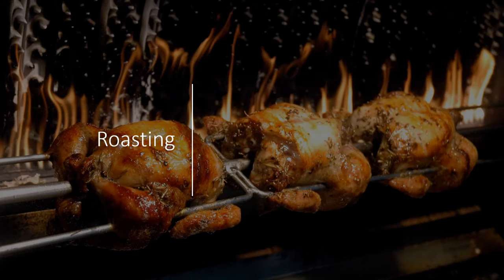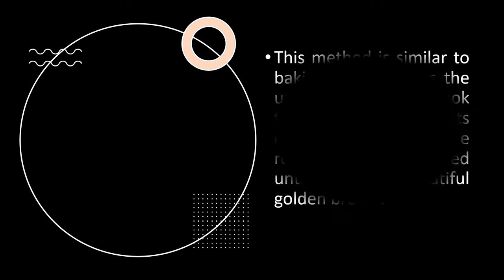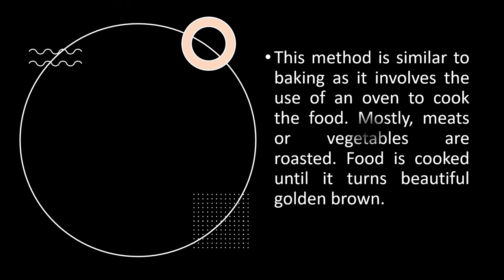Roasting. This method is similar to baking as it involves the use of an oven to cook the food. Mostly meats or vegetables are roasted. Food is cooked until it turns a beautiful golden brown.